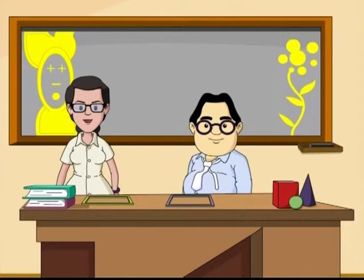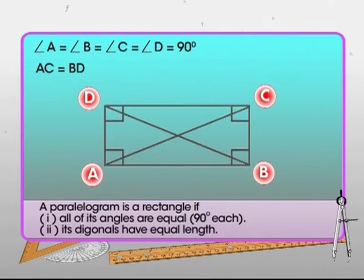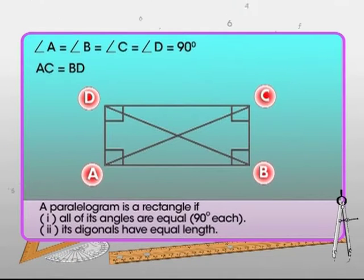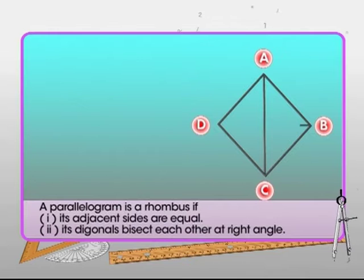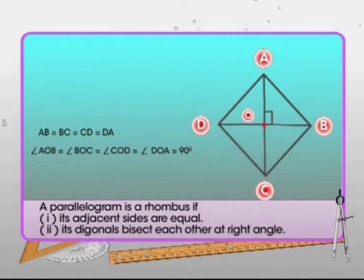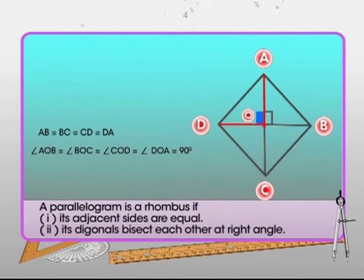A parallelogram is a rectangle if all its angles are equal, measuring 90 degrees each, and its diagonals have equal length. In the given figure, angles A, B, C, and D each measure 90 degrees, and diagonals AC and BD are equal. A parallelogram is a rhombus if its adjacent sides are equal and its diagonals bisect each other at right angles — in the given figure, AB equals BC equals CD equals DA, and angles AOB, BOC, COD, and DOA are all equal to 90 degrees.